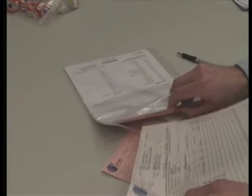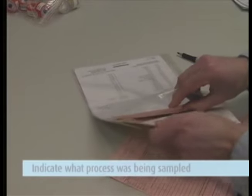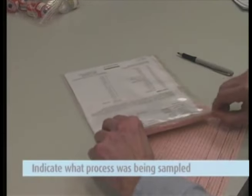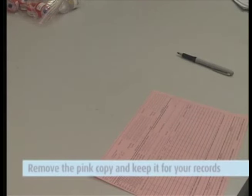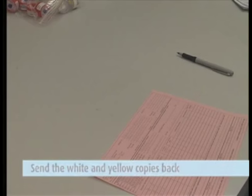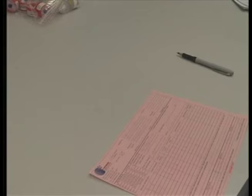Then, complete the chain of custody form. It is important that you include all the information requested in order to ensure the turnaround time of your samples. Please indicate what process was being sampled, such as welding, electroplating, etc., in the comments section of the chain of custody form, removing the pink copy and keep this for your records. Send the white and yellow copies in with the samples to the lab in the large Ziploc bag.